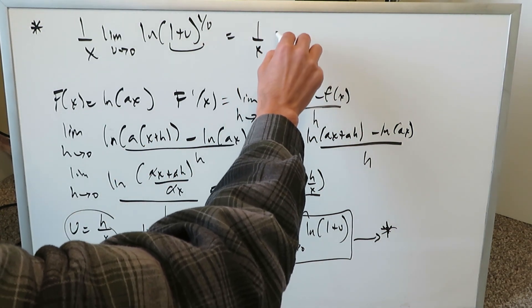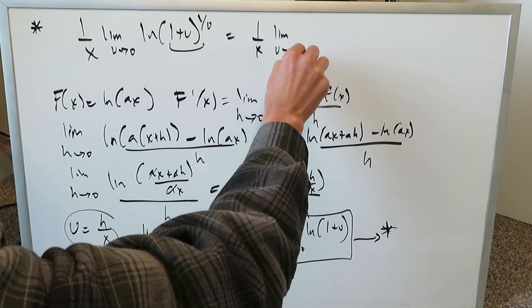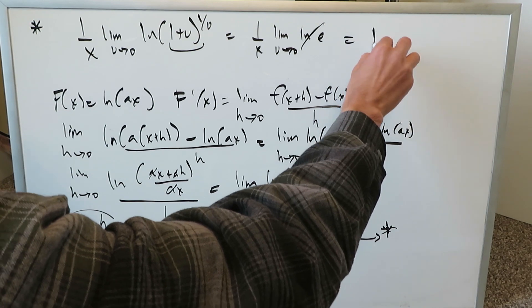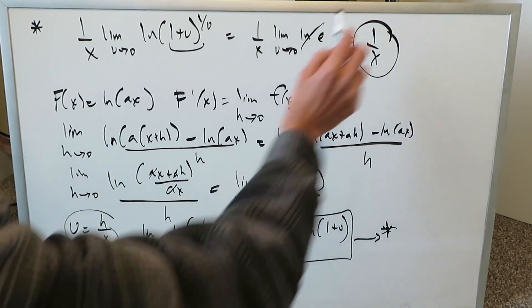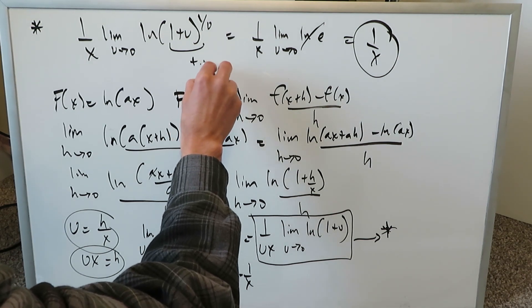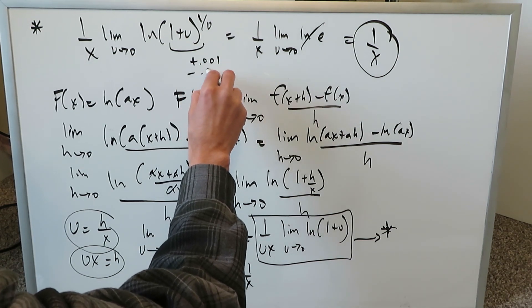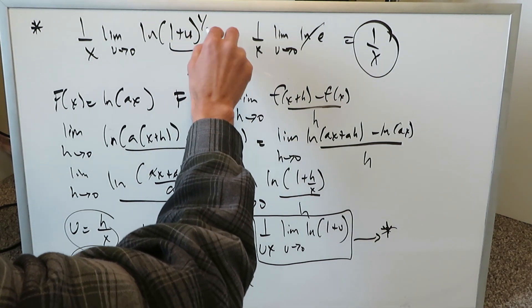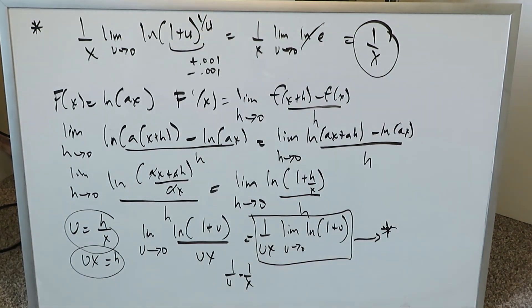Everything here will then become 1 over x limit as u approaches 0, ln(e) which is just a 1 and then you end up with this final end result which is what we wanted. Again I'm using here limit approximation of positive 0.001 and minus 0.001 here in places of these u's. When you do that you'll easily get a value of e. You can check that for yourself on the calculator and it will be right.